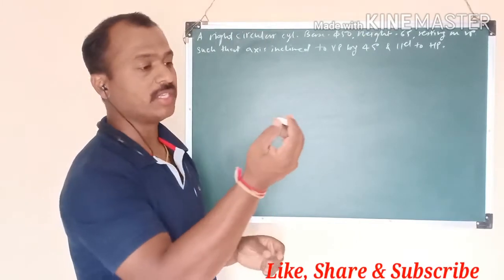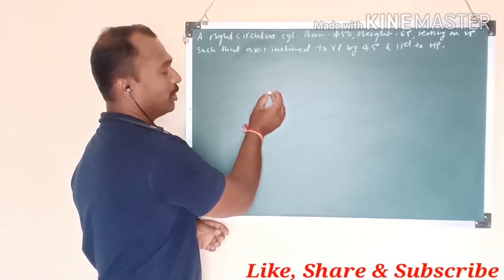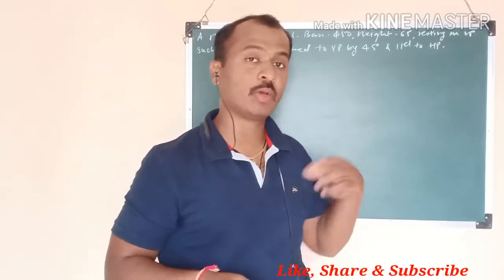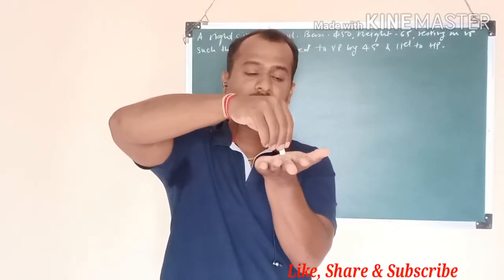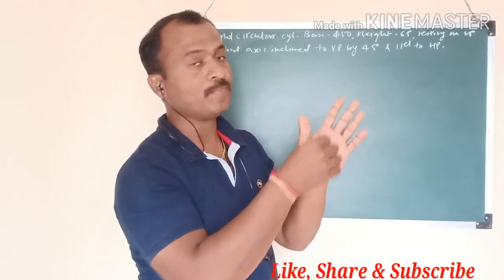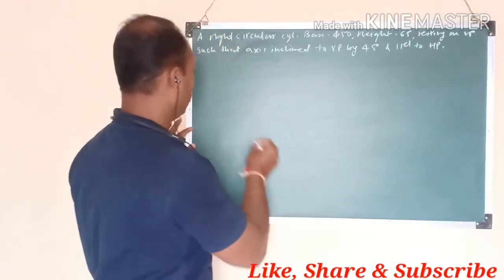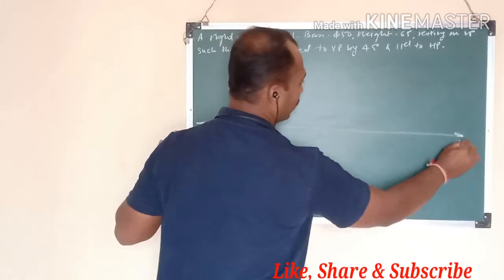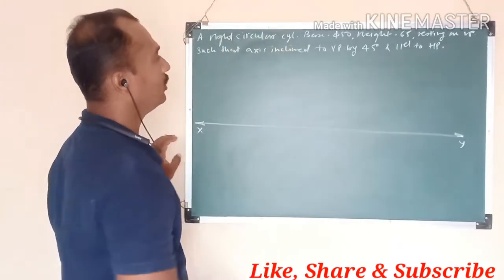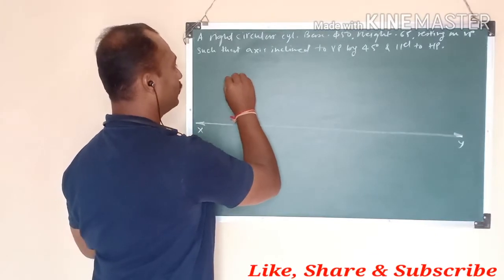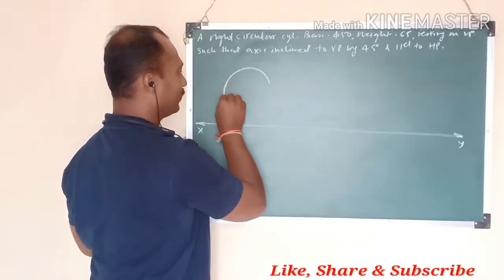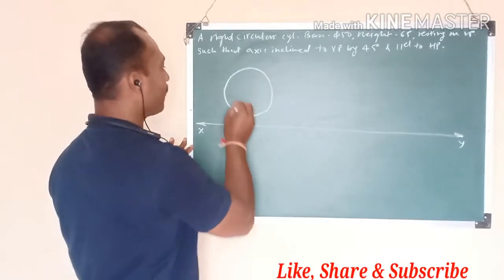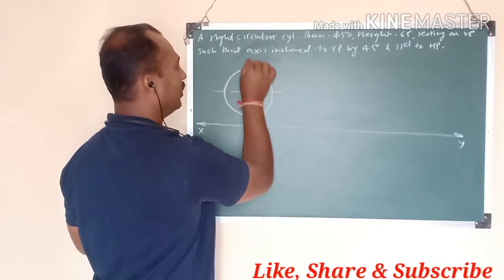Since the cylinder is resting on HP, the circle will appear in the top view. When resting on HP and then transferred to VP, the front view shows a circle. So first, we draw the circle in the front view with a diameter of 20mm and divide the circle into eight equal parts.